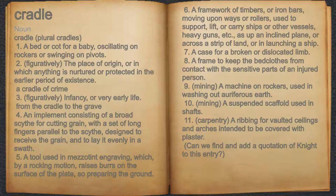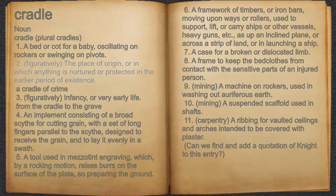Cradle. Noun. 1. A bed or cot for a baby, oscillating on rockers or swinging on pivots. 2. Figuratively, the place of origin, or in which anything is nurtured or protected in the earlier period of existence. For example, a cradle of crime.